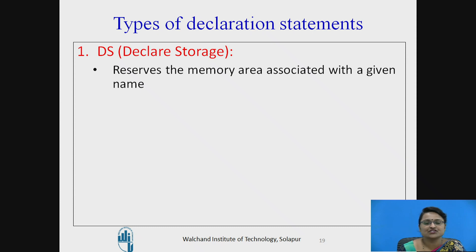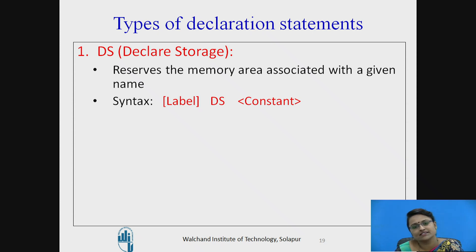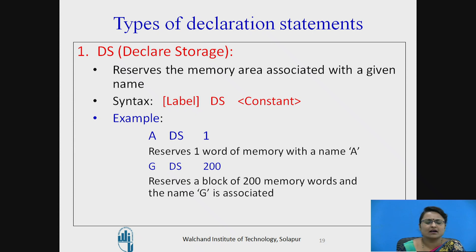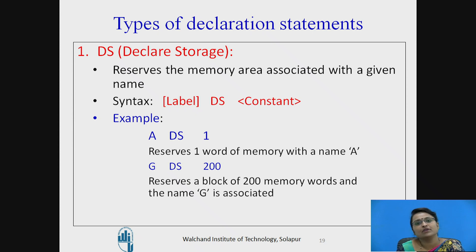Moving to the detail of declaration statements: Declare Storage (DS) reserves a memory area associated with a given name. The syntax is: label, DS mnemonic, constant value. For example, 'A DS 1' reserves one word of memory and names it A. Another example: 'G DS 200' reserves a block of 200 memory words and names it G.